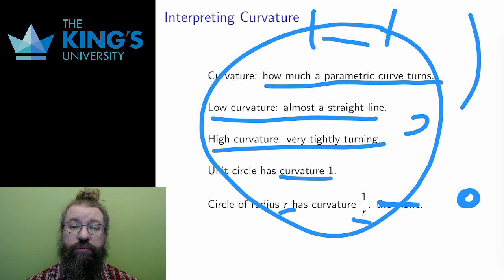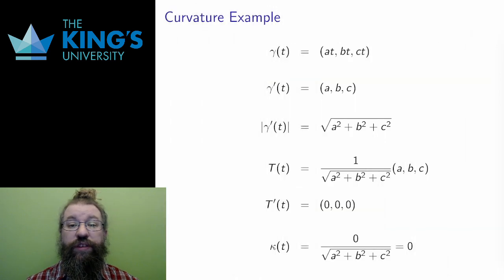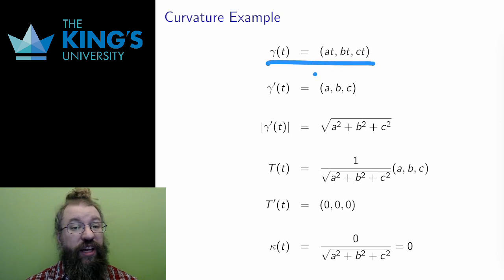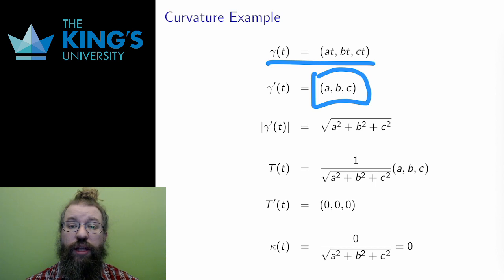Now let me do an example. First, this is a straight line parametric curve going directly in the direction ABC. It's a straight line, so it should have no curvature. Let me check the calculations to make sure that is true.